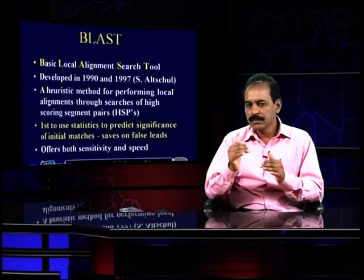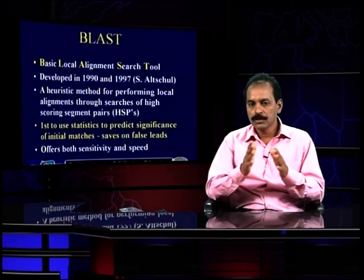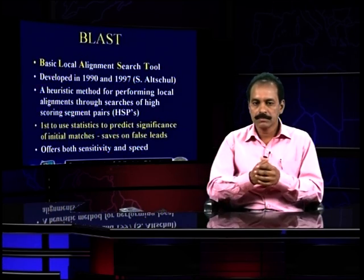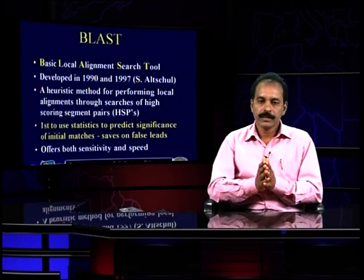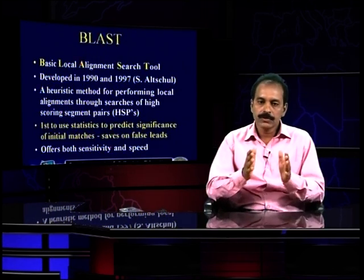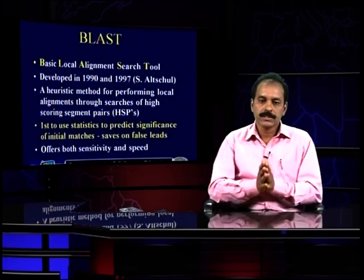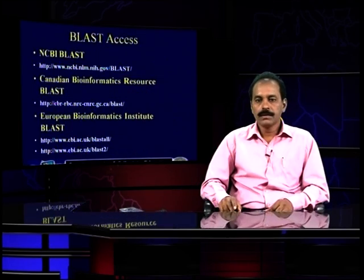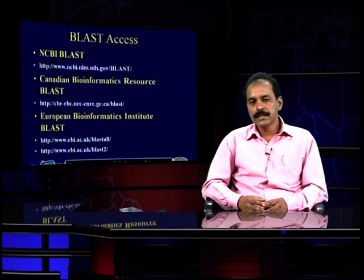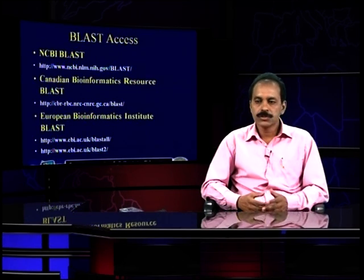There are different alignments like pairwise alignment, parallel alignment, and also alignment from different sources. BLAST is basically aligning local segments. It uses statistics to predict significance of initial matches, saves on false rates, and offers both sensitivity and speed. BLAST can be accessed through NCBI BLAST, Canadian Bioinformatics Resource, or the European Bioinformatics Institute.